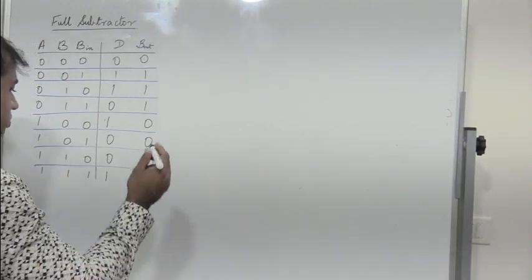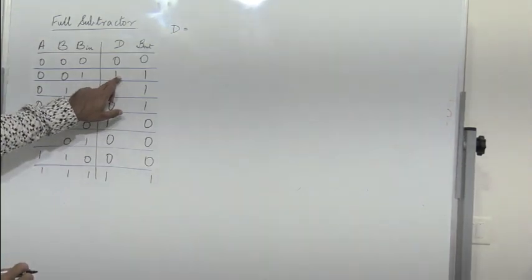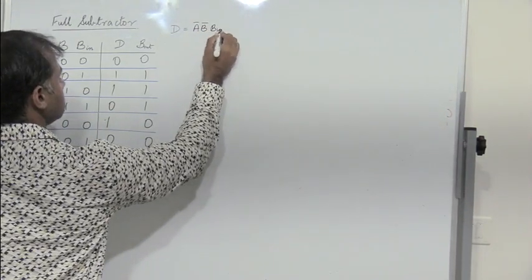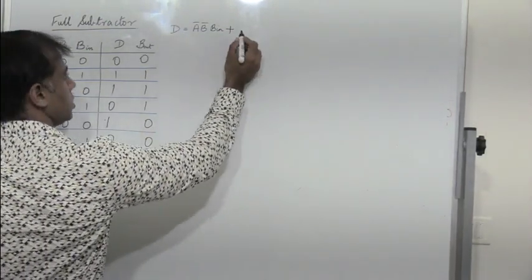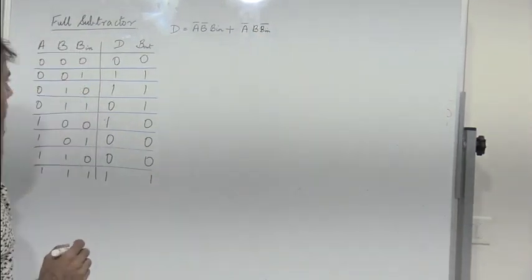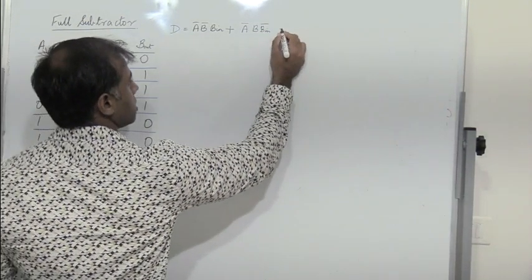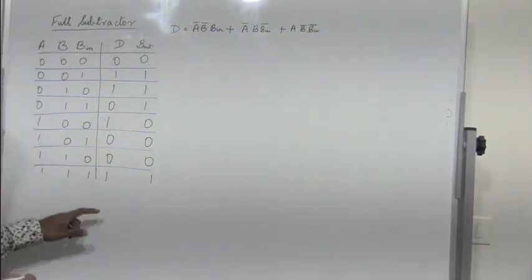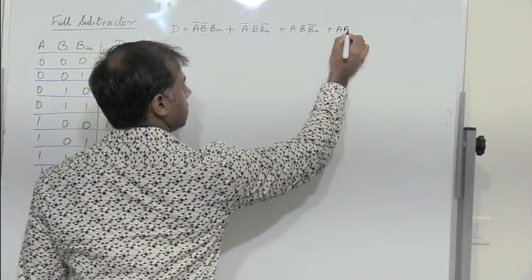Now let us write the expression for difference. The expression for difference is: I have a 1 for 0,0,1 which is A bar, B bar, Bin. Plus I have a 1 for 0,1,0 which is A bar, B, Bin bar. Next there is a 1 for 1,0,0 which is A, B bar, Bin bar. And a 1 for 1,1,1, so plus A, B, Bin.